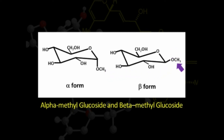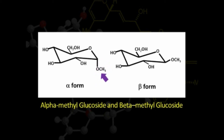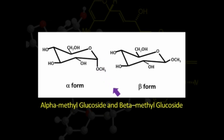When glucose is converted to methyl glucoside, the hydrogen atom is substituted with a methyl group. If this group is present in the axial position, it is called alpha-methyl glucoside; if in the equatorial position, it is called beta-methyl glucoside. Alpha-methyl glucoside is much more stable than beta-methyl glucoside, and this is called the anomeric effect.